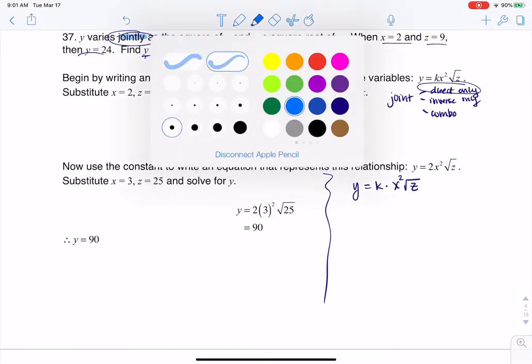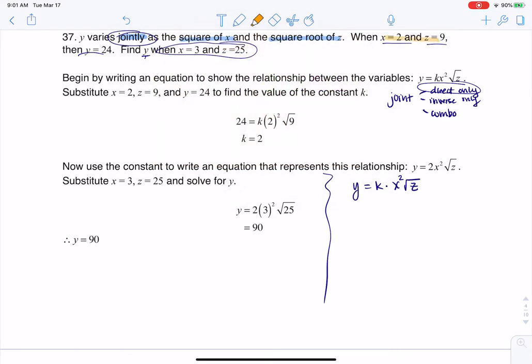Let's go ahead and use our ordered triple: x equals 2, z equals 9, y equals 24, and plug it in. So I'll put 24 here. For x, I'm going to put 2 squared, and for z, square root of 9—they gave us a nice number. So I get 24 equals k times 4 times 3, which gives me 24 equals 12k, telling me k equals 2.